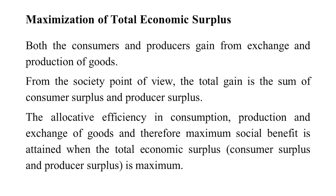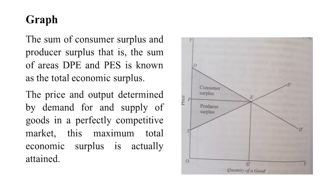This condition holds only in the case of perfect competition — that total gain is the sum of consumer surplus and producer surplus. The allocative efficiency in consumption, production, and exchange of goods leads to maximum social benefit when the total economic surplus — which is the sum of consumer surplus and producer surplus — is maximum. This is only possible in the case of perfect competition.